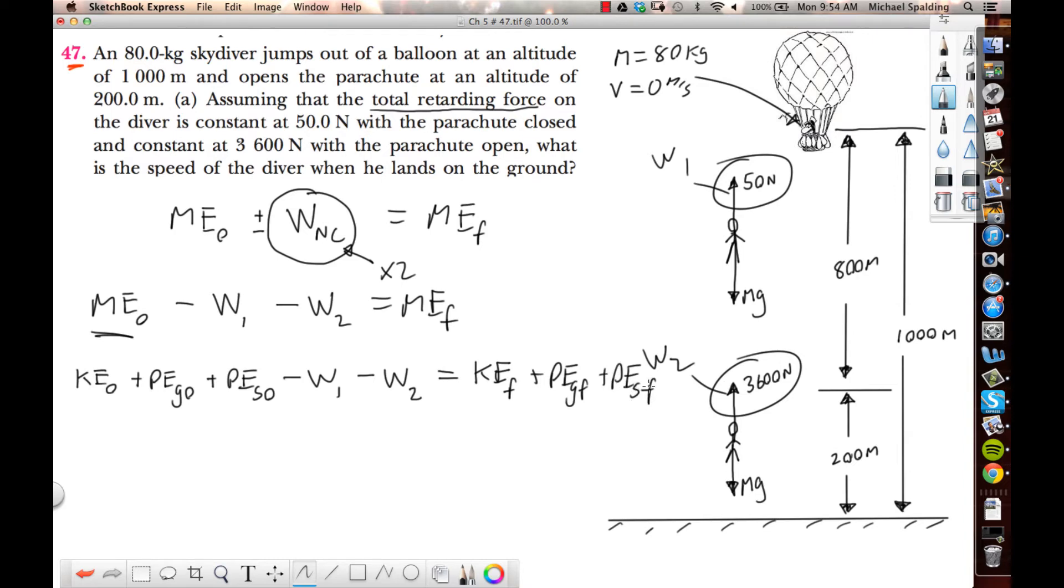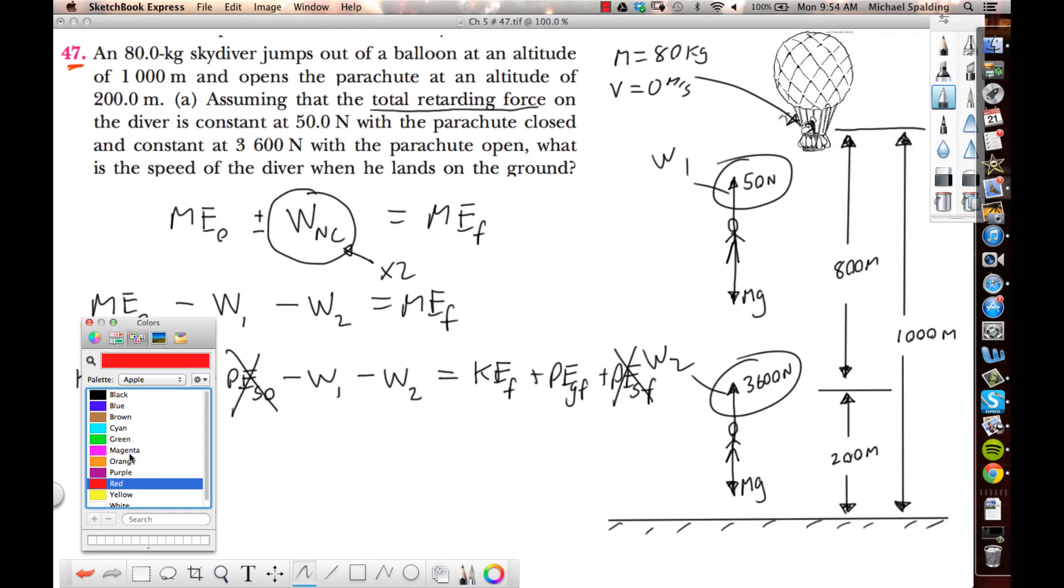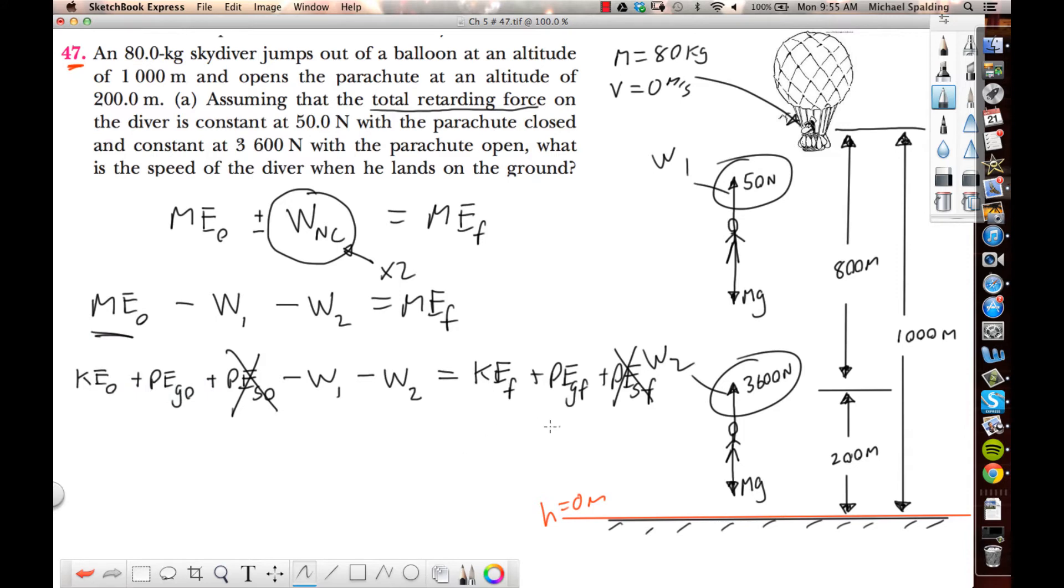Does this problem have any springs? Nope. So cross the spring energy out. Where's the zero point going to be? Put the zero point at the lowest point in the problem. Where's the lowest point in the problem here? The ground. I'm going to put a red line down here. That red line is our H equals zero. That's the zero point. Does he start with potential of gravity? Yeah. Up here when he's in the balloon, he's got a lot of potential energy. Does he start with any kinetic? No, because he's at rest.